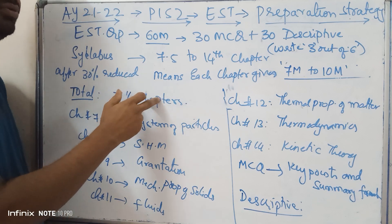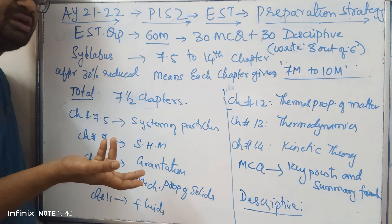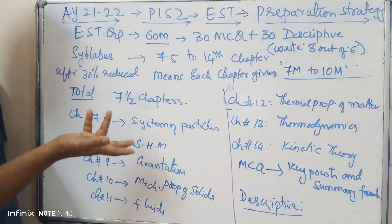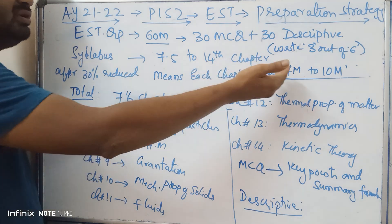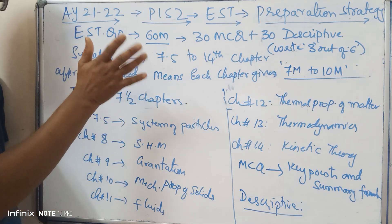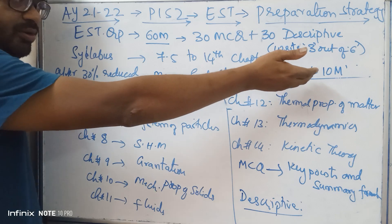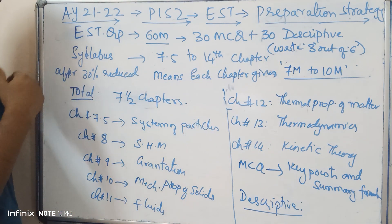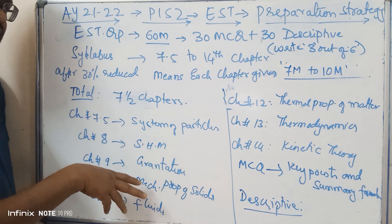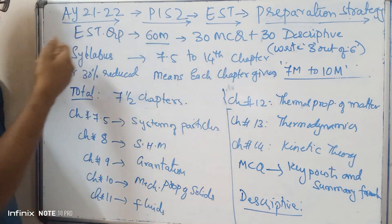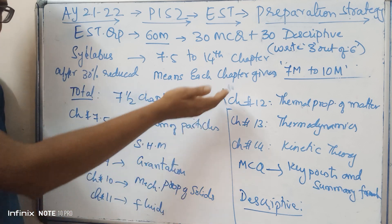After the 30% reduction we have seven and a half chapters meant to be covered for 60 marks total. If you take 10 marks per chapter across seven and a half chapters, that gives roughly 75 marks, so some chapters will give you seven marks, some eight, some nine, and a maximum of ten marks from each chapter. We are following the concept of equal weightage for all chapters, adjusted slightly depending on the content present in each chapter.